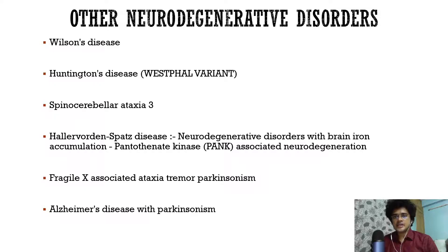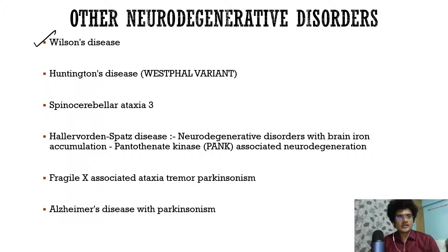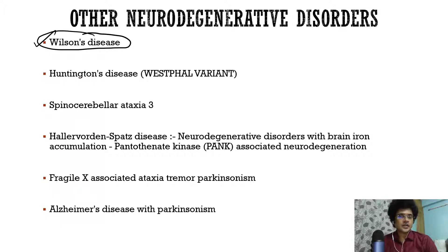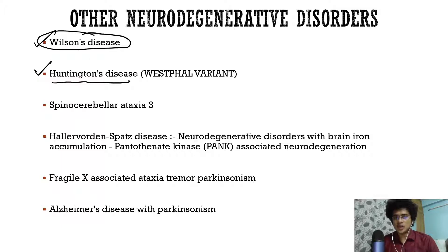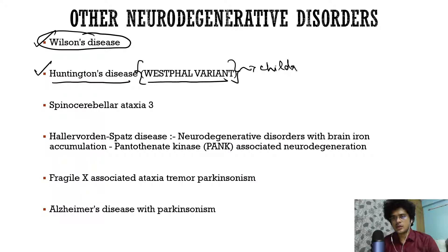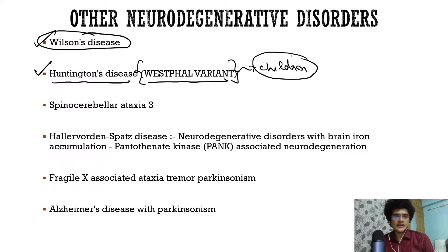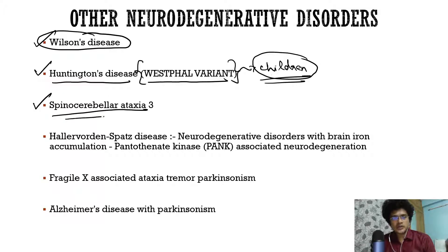Neurodegenerative disorders associated with Parkinson's disease: top of the list is Wilson's disease — hepatolenticular degeneration — which causes Parkinson's disease. Next is Huntington's disease, which usually does not cause Parkinson's-like features, but the Westphal variant does. The Westphal variant is more common in children and presents with Parkinson's-like features. In spinocerebellar ataxias, SCA-3 type 1 causes Parkinson's features.